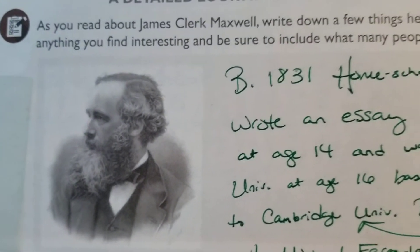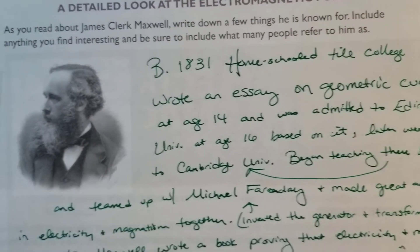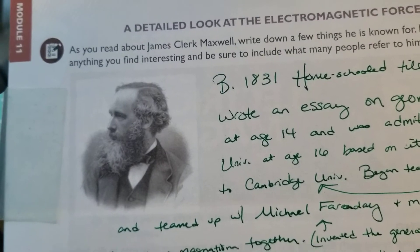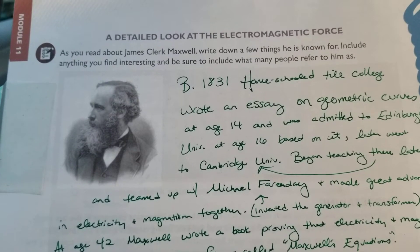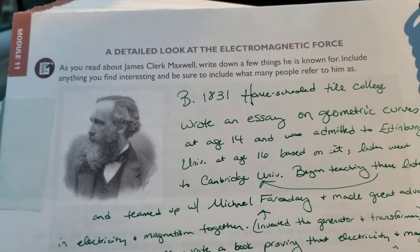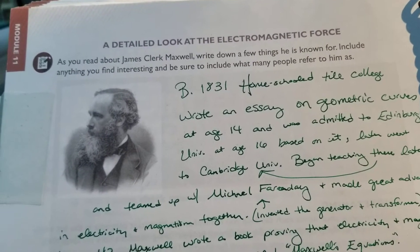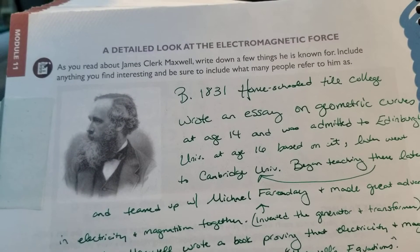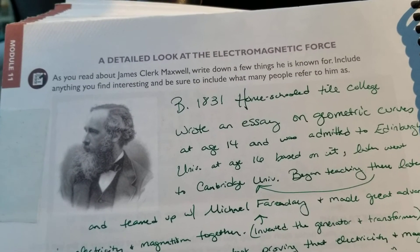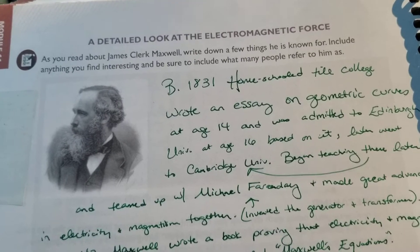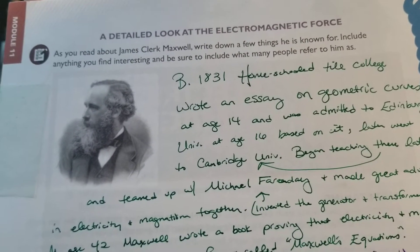There's this guy named James Clerk Maxwell. He was born in 1831, homeschooled until college. When he was 14, he wrote an essay on geometric curves. He was admitted to Edinburgh University in Scotland at age 16 based on that very essay. Later he outgrew Edinburgh University and went on to Cambridge University, where he was teaching and teamed up with Michael Faraday, who invented the generator and transformer. The two of them together made great advances in electricity and magnetism.